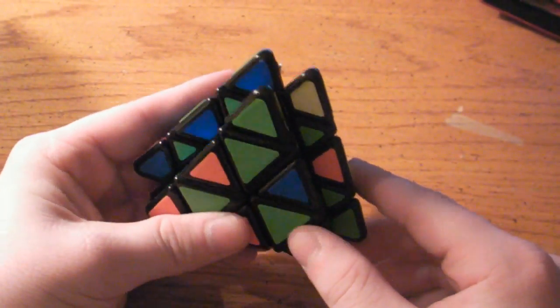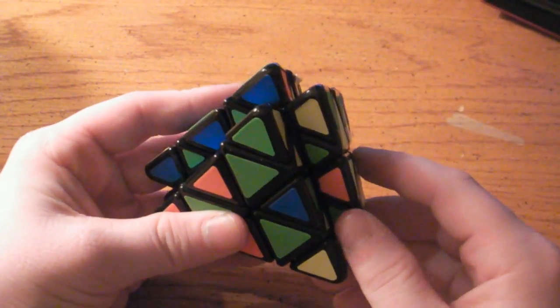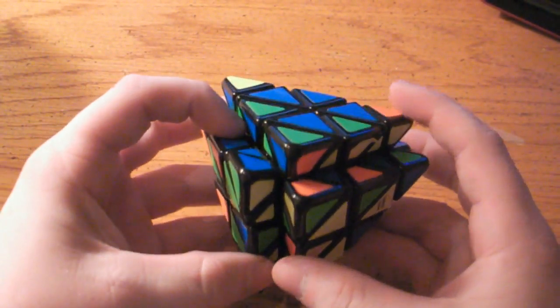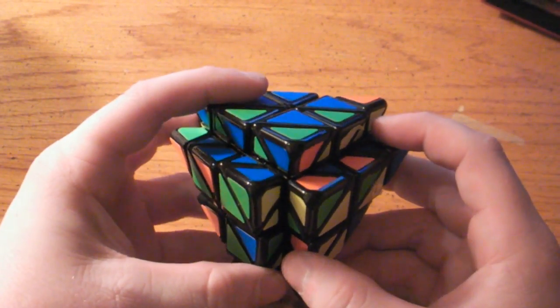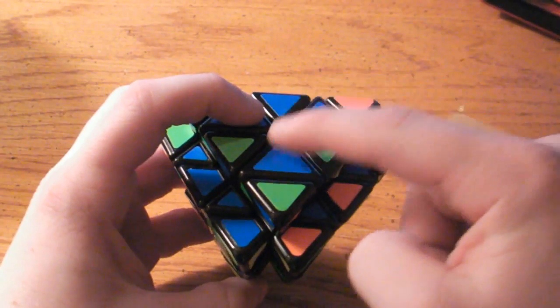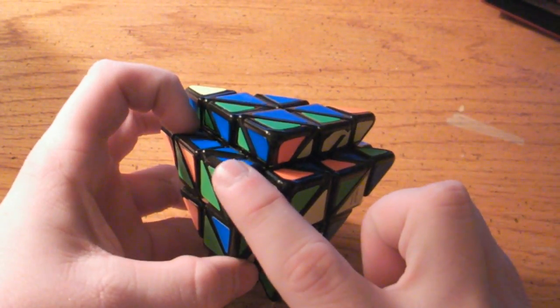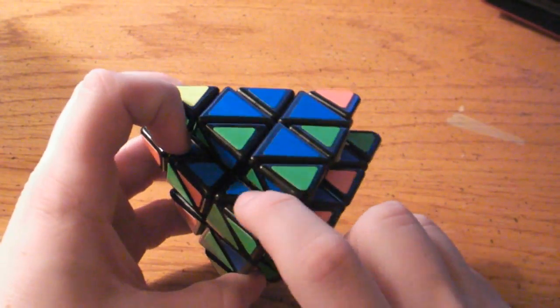So what you're going to want to do is choose any of the four tips you want. I'm going to choose this one right here just because that's the first one I see. So now you're going to check what three colors are there. These three tip pieces are going to have green, blue, and yellow. So then you need to find all three of the tip pieces with green, blue, and yellow.